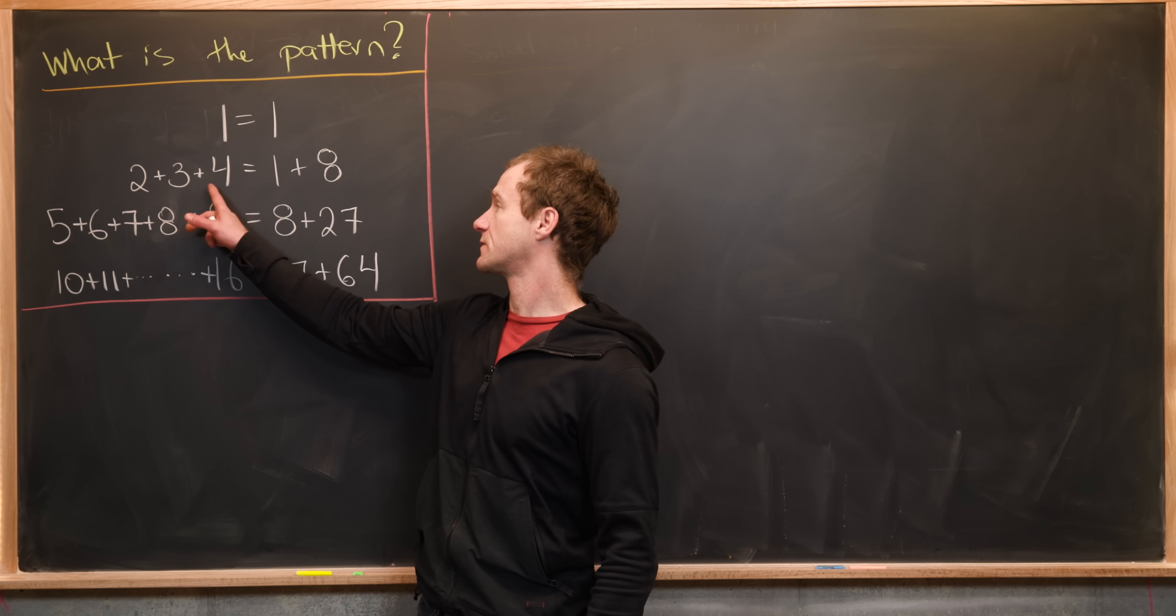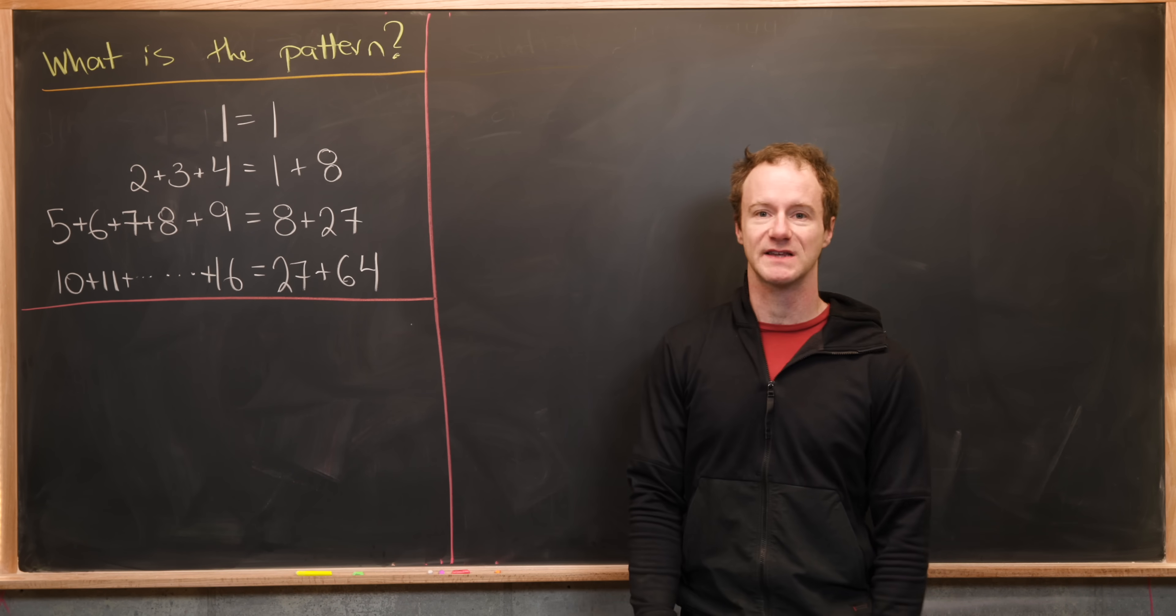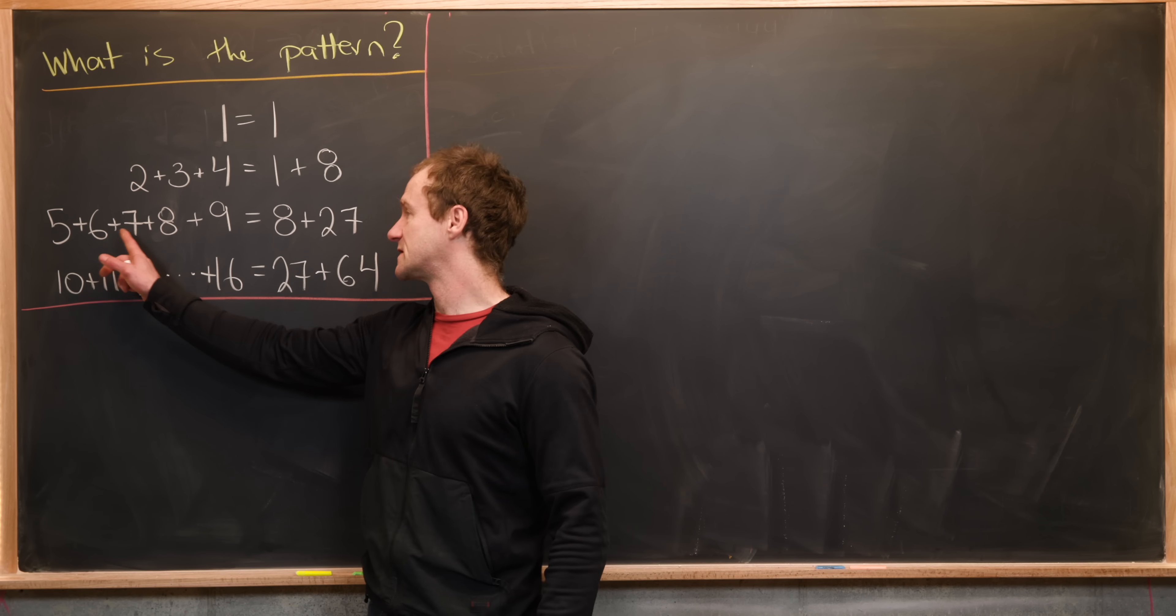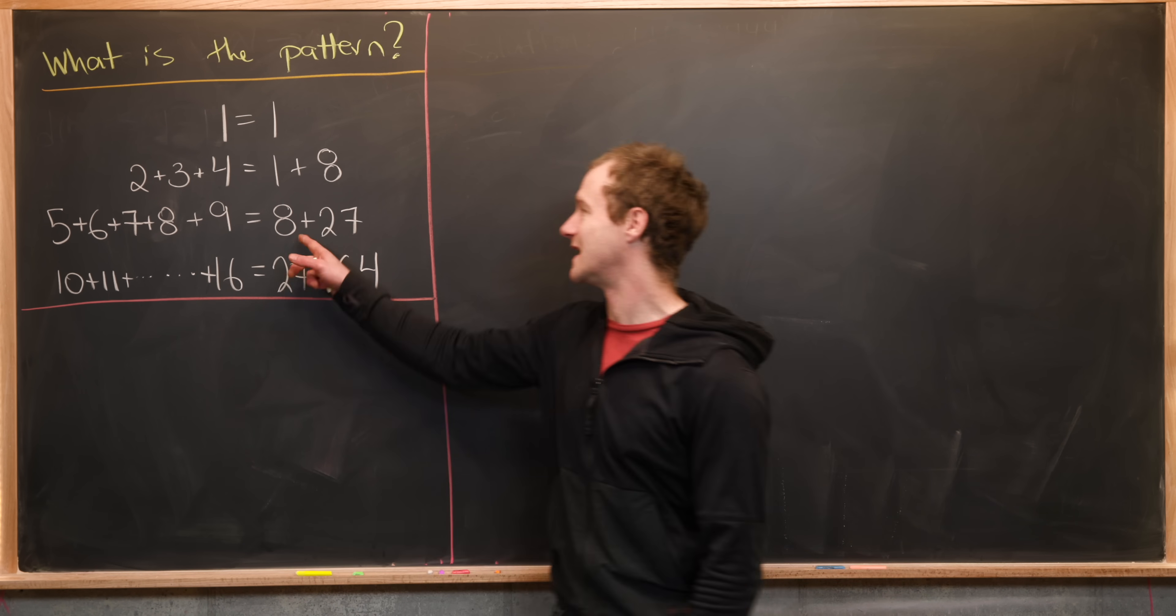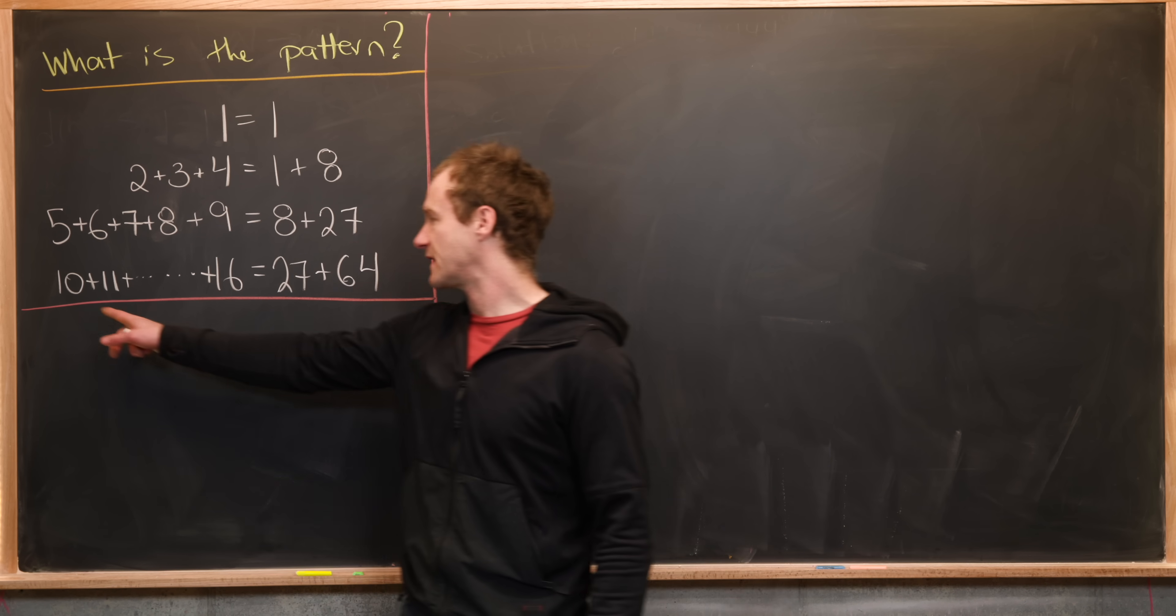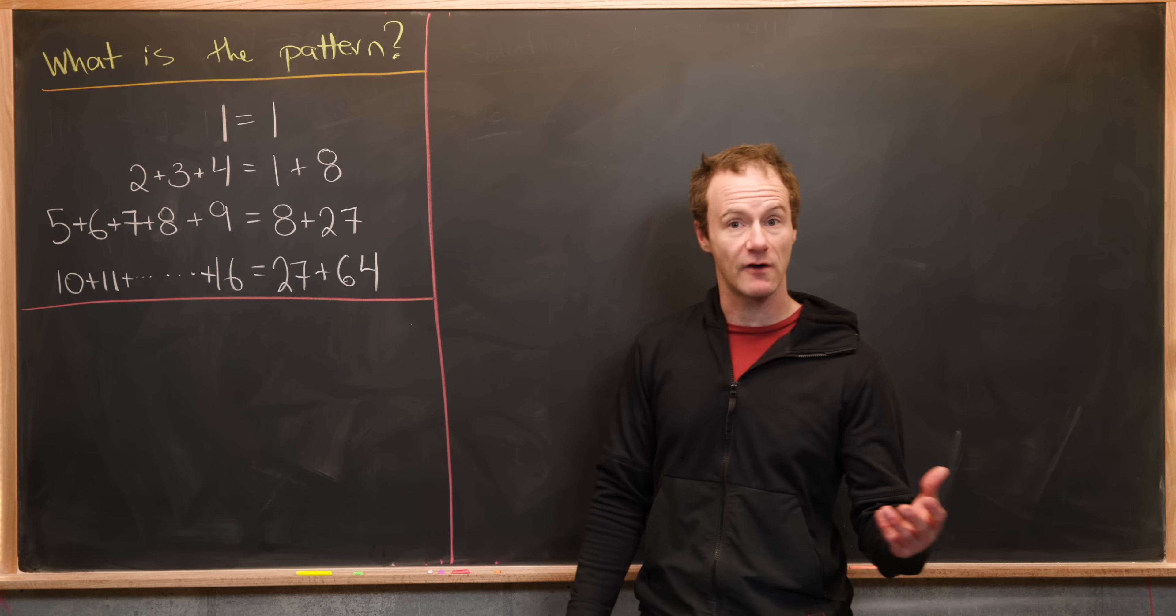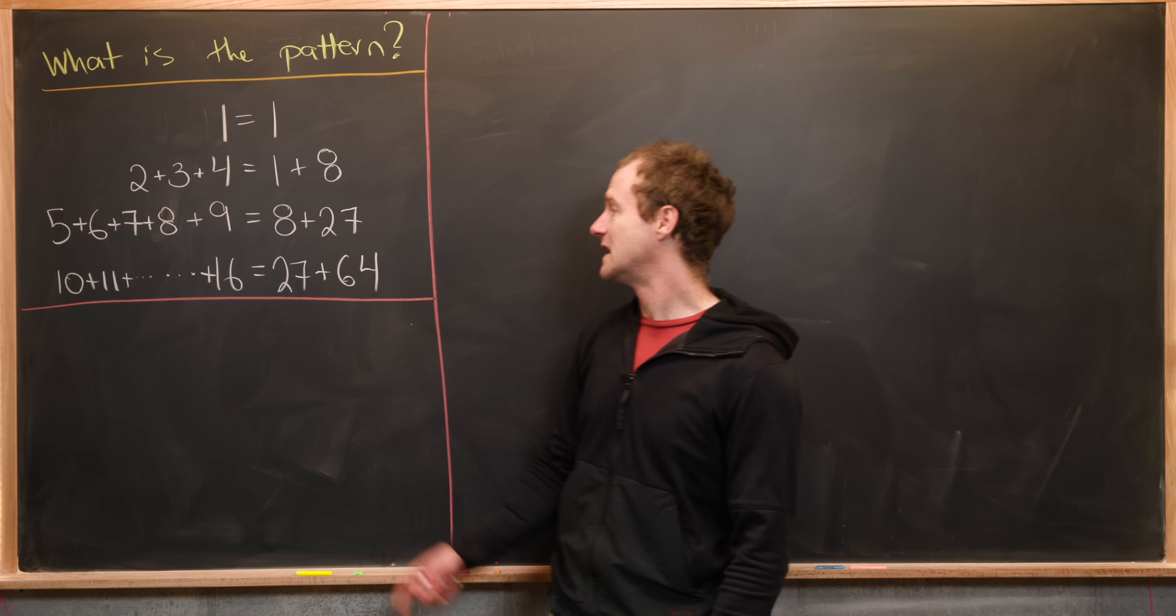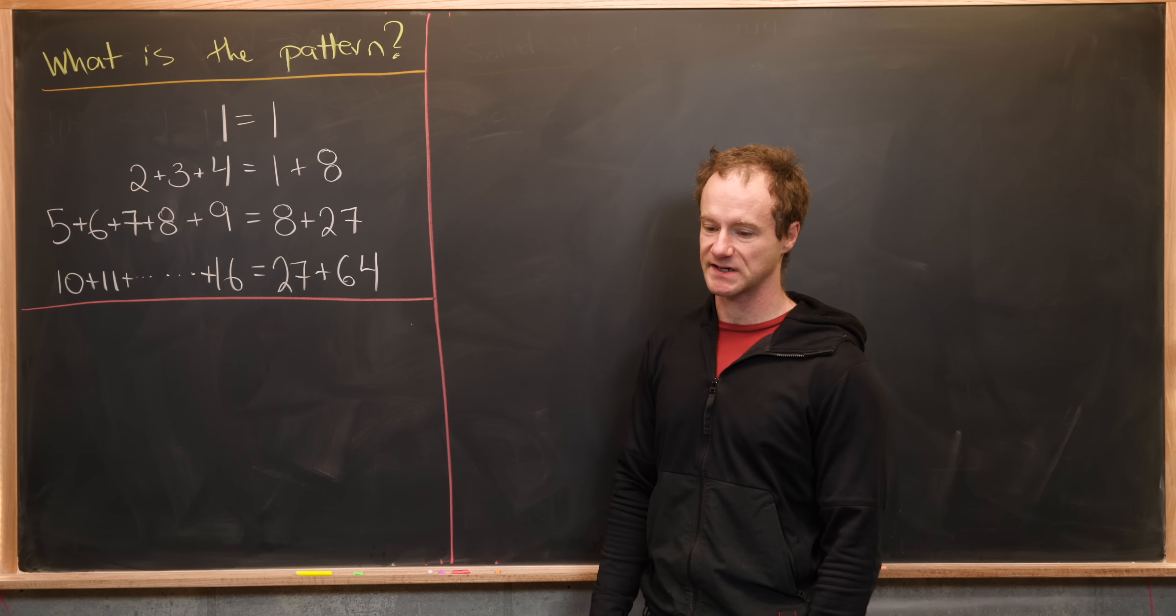Then we have 2 plus 3 plus 4 equals 1 plus 8. 5 plus 6 plus 7 plus 8 plus 9 is the same as 8 plus 27. And then finally 10 plus 11 plus 12 all the way up to 16 is equal to 27 plus 64.